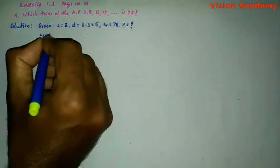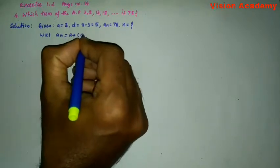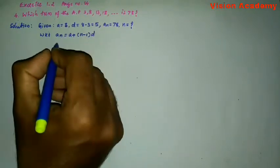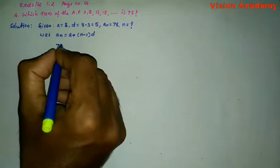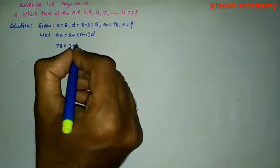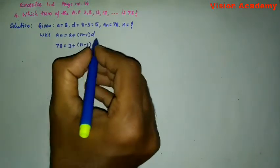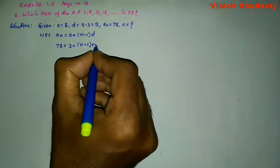We know that An is equal to A plus N minus 1 D. Here An is 78 is equal to A is 3 plus N. We need to determine, right as it is, N minus 1 into D is 5.